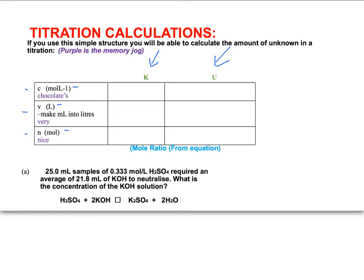So for example, we have this equation here, and we've got 25 mL samples of a 0.333 mole per liter sulfuric acid. So because they've said 0.33 mole per liter, this is a concentration that we know. So this is our known solution.